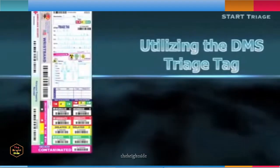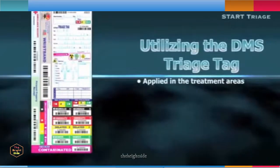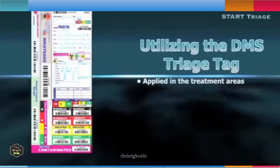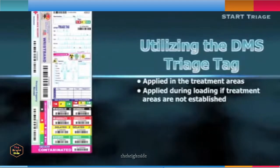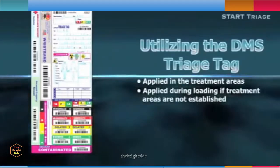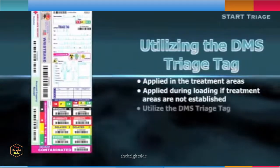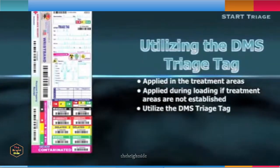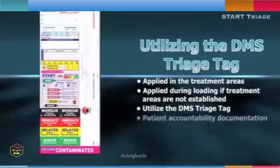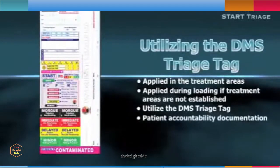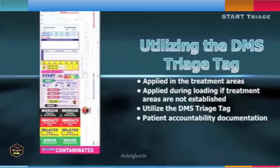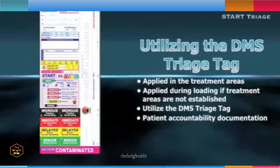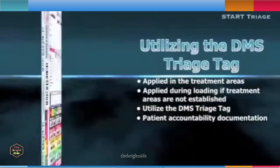Triage tags are applied to patients as they enter the treatment area after quick secondary triage to confirm or change their acuity category. If treatment areas were not established, the triage tag is applied to the patient just prior to transport. The Disaster Management Systems triage tag has been selected by the county fire chiefs and the county paramedic agency committee as the preferred triage tag for use in the county of San Diego.